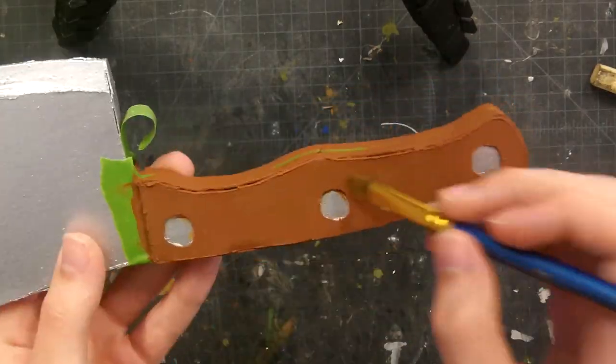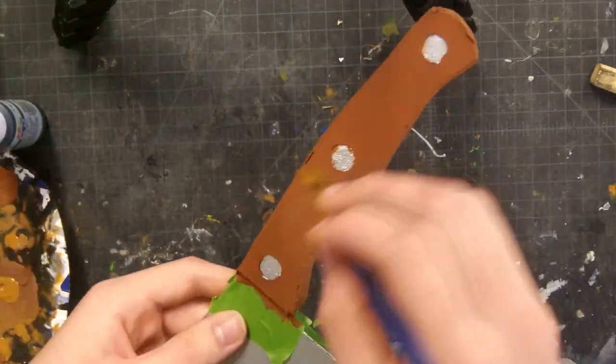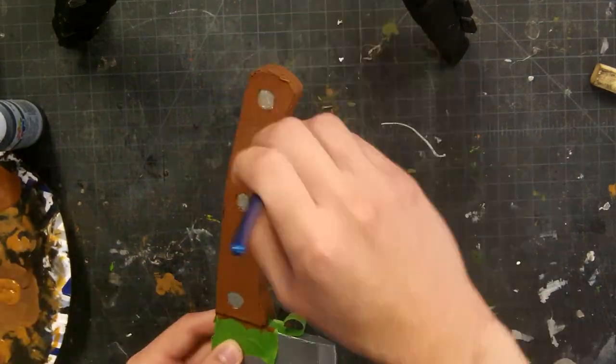Then to give the handle a little bit more texture I got some raw sienna and dry brushed it over the handle. Just to give that more of that wood grain look.